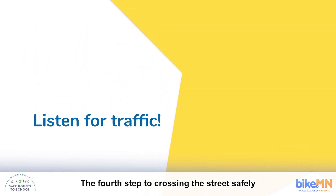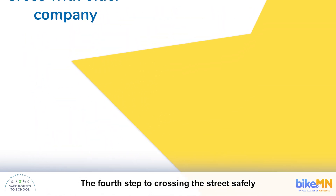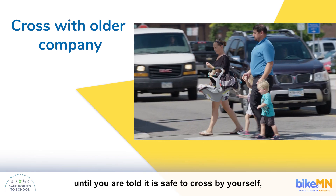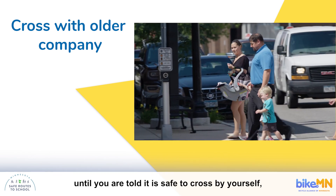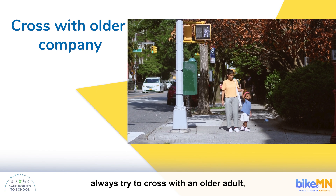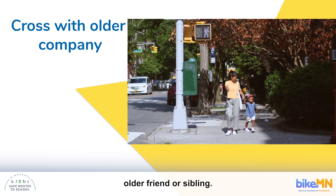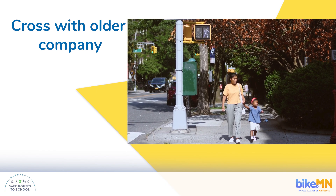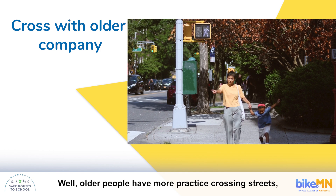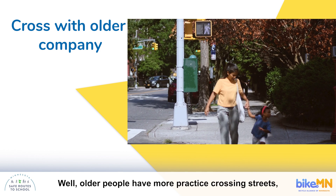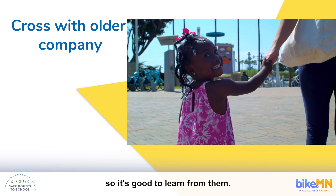The fourth step to crossing the street safely is to cross with older company. Until you are told it is safe to cross by yourself, always try to cross with an older adult, older friend, or sibling. Older people have more practice crossing streets, so it's good to learn from them. They are also usually taller than you are, so it is easier for drivers to see them.